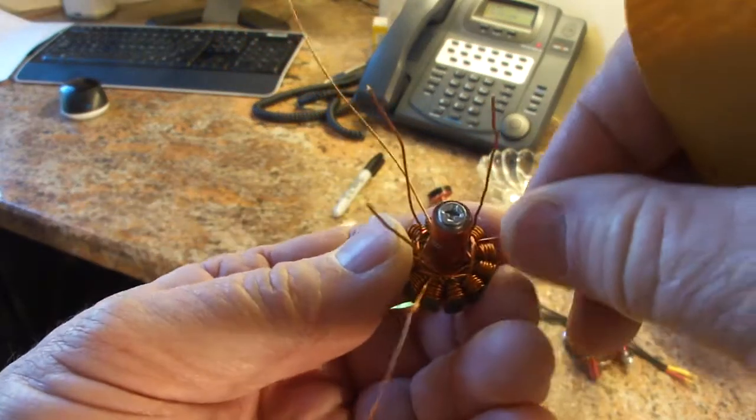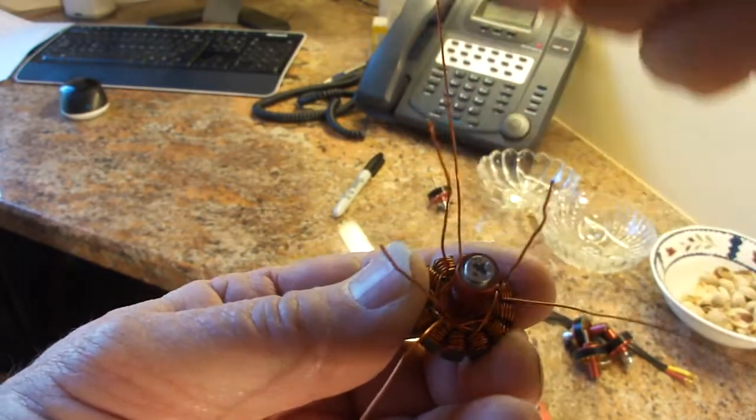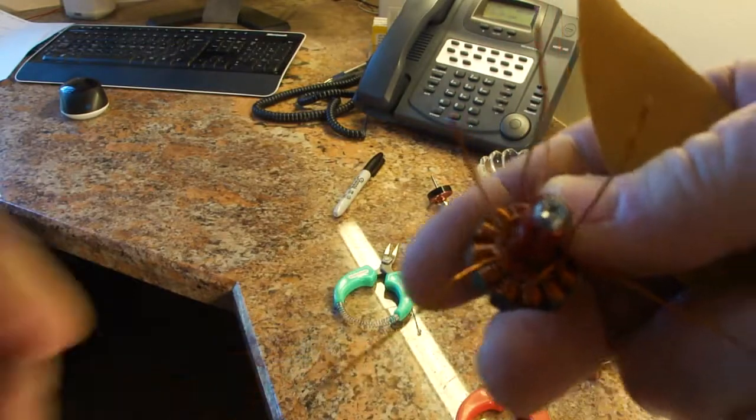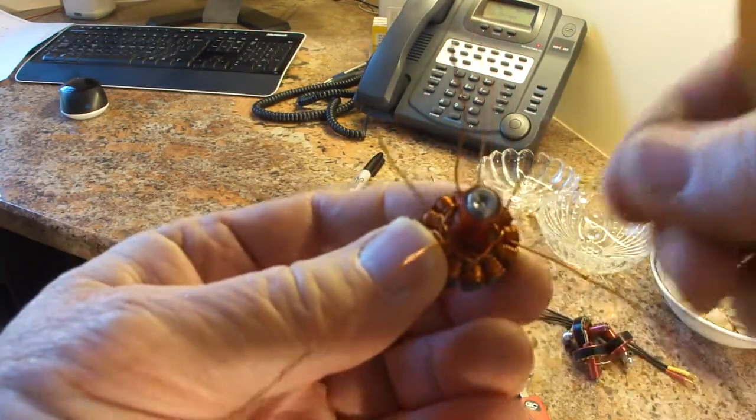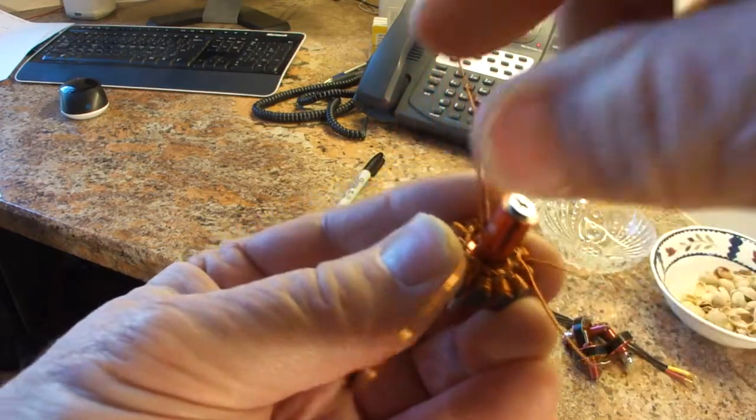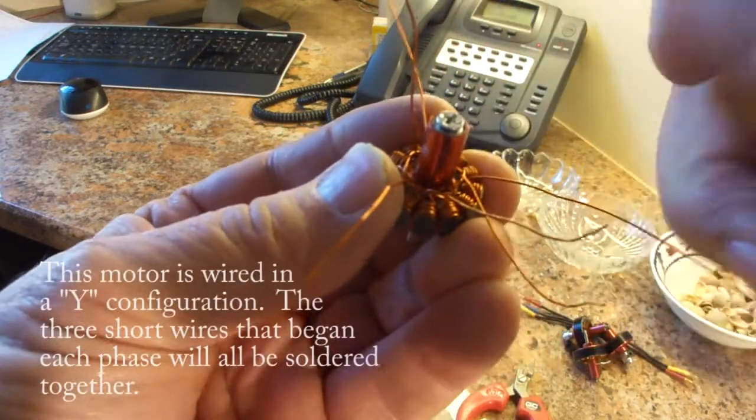Now if you notice, we left the long leads. Those were going to be our motor leads. Those were at the end. That was the last, the end of the wire on each phase. And the short ones are going to be all connected together to form the common point of the Y.